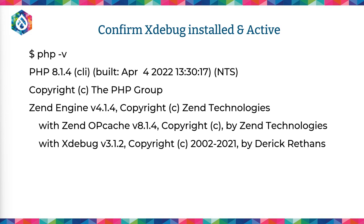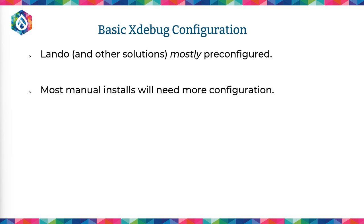Once you have Xdebug installed, if you run php -v, you should see a result that shows what version of Xdebug. You may see that I'm using Xdebug 3. There are differences with Xdebug 2, especially in configuration. So if you're using Xdebug 2, do take note and read the documentation on configuration, because otherwise your remote ports and debug options may fail. Most manual installs will need more configuration, but I do have example configurations on GitHub and will go through them briefly today.